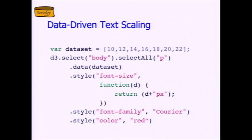All right, so we're going to be able to write JavaScript then. Having a value associated with an element of the DOM, we can then manipulate that element of the DOM in an interesting way dependent on the data. Typically, what we'll do is we'll change the color or the size or the representation in some way of the visual aspect of the DOM.